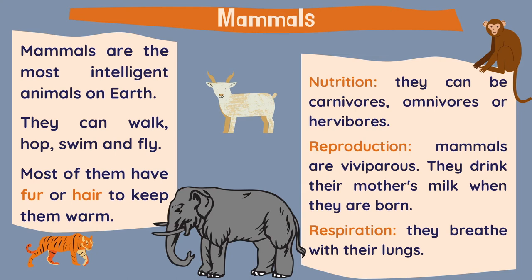Let's have a look at these key life functions: nutrition, reproduction and respiration. Mammals can be carnivores, omnivores or herbivores. In terms of reproduction, mammals are viviparous — they develop the child inside the mother. They drink their mother's milk when they are born. And about respiration, they breathe with their lungs. Some sea mammals, like the whale, need to come out of the water to be able to breathe.